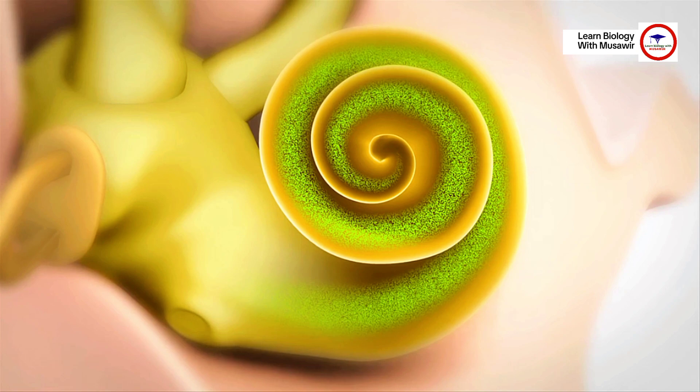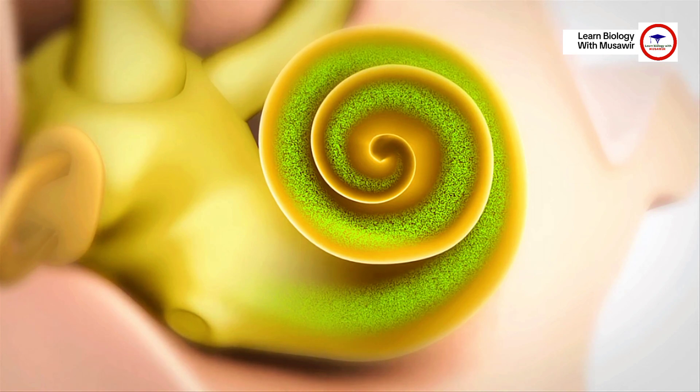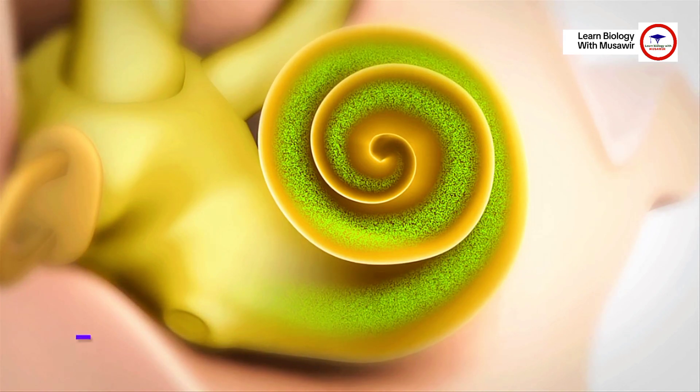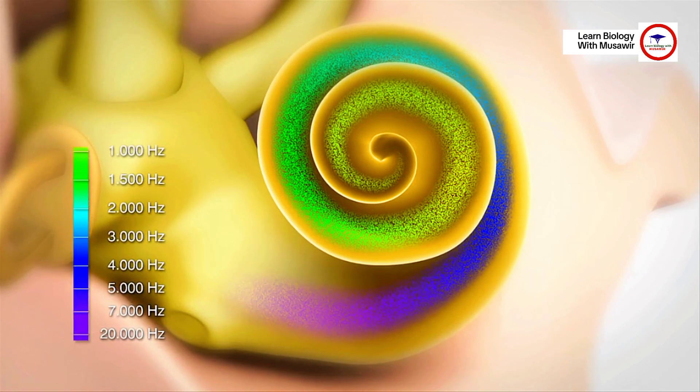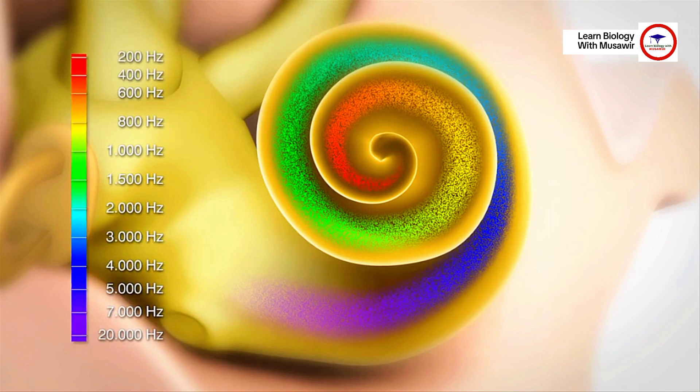The change from mechanical vibration to electrical pulse is a complex process resulting from the movement of hair cells in the cochlea. Along the entire length of the cochlea, the hair cells are arranged like the keys of a piano.